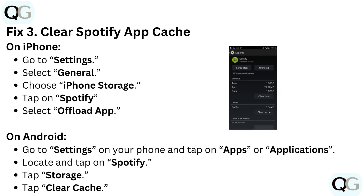Fix 3: Clear Spotify app cache. On iPhone, go to Settings and select General. Choose iPhone Storage and tap on Spotify. Select Offload App.